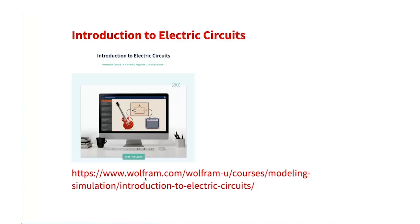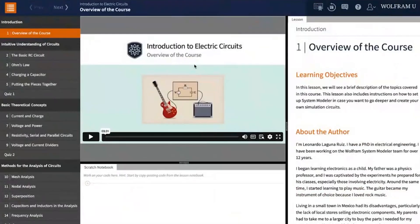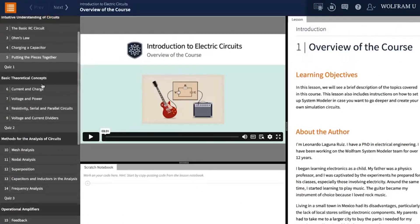The name of the course is Introduction to Electric Circuits and you can find it at the Wolfram U site. Here you can see the link. This course consists of 26 lessons that make a total of four hours and a half.